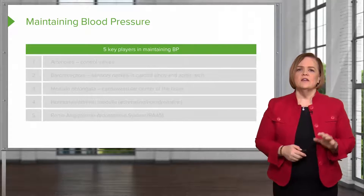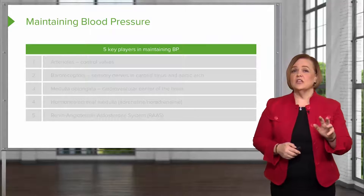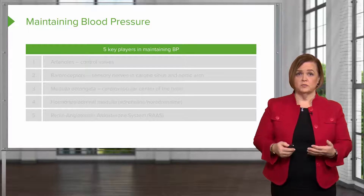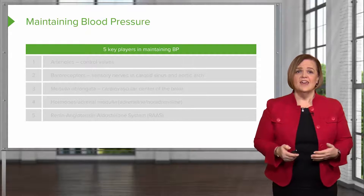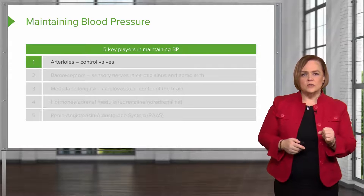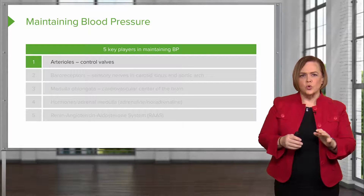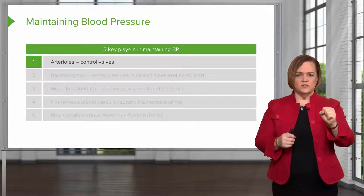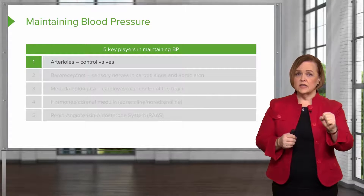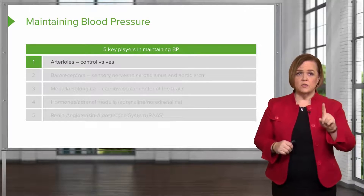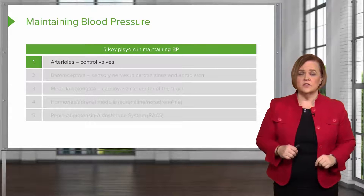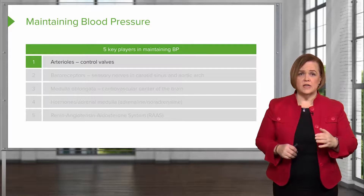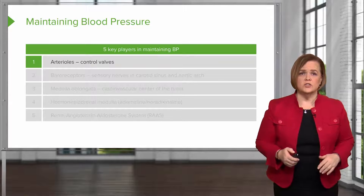Let's look at the five key players in your body for maintaining a normal, adequate blood pressure. Number one are the arterioles — they're kind of like the control valves. If we can impact those arterial valves, we can have a really significant impact on blood pressure. Think of them as the control valves for maintaining a certain level of pressure in your system.